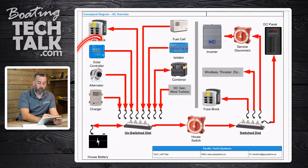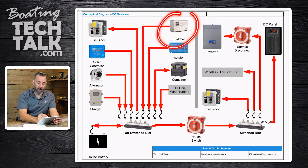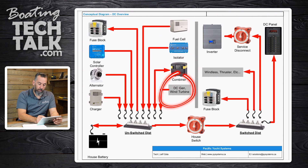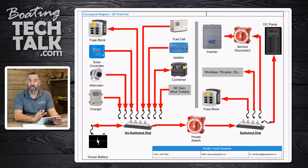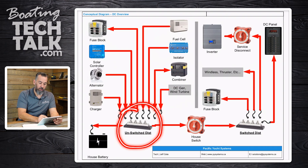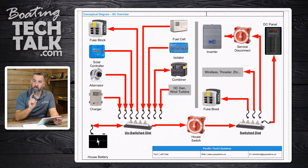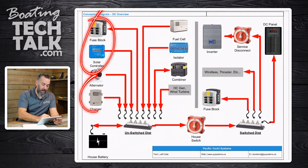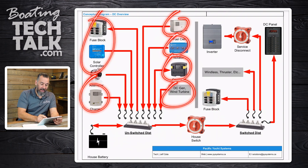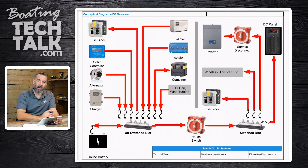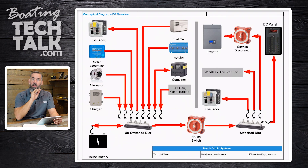Other devices: a solar controller goes to unswitched. And then other items — fuel cell, methanol fuel cell, battery isolator, battery combiner, wind turbine — all these devices have to be connected to the unswitched distribution. Meaning that if you have your house battery switch turned off, those devices — bilge pumps, alternator, battery chargers — all have to have a direct connection to the battery. That's essential because you can never disconnect those appliances or devices from your battery.